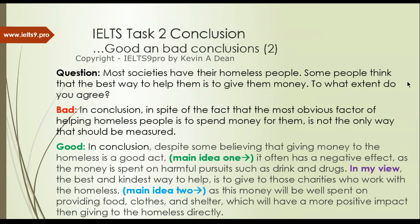Most societies have homeless people — some people think we should give them money, do you think this is good or not? A bad conclusion: 'In conclusion, in spite of the fact that the most obvious factor of helping homeless people is to spend... giving money to them is not the only way that should be measured.' Where's the opinion? Where are the ideas? A good example: 'In conclusion, despite some believing that giving money to the homeless is a good act, it often has a negative effect as they spend it on drink and drugs. In my view, the best way is to give to charities that help the homeless as they will spend it on food, clothes, and shelter.' This explains a lot more and covers all the main ideas.